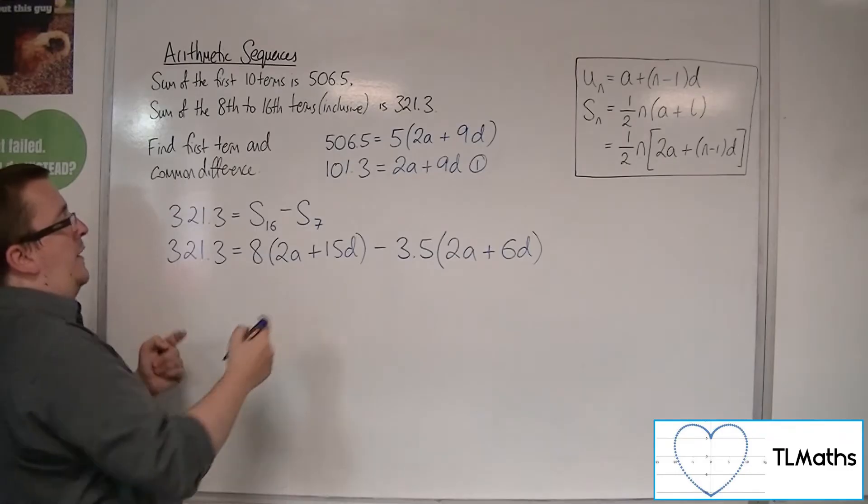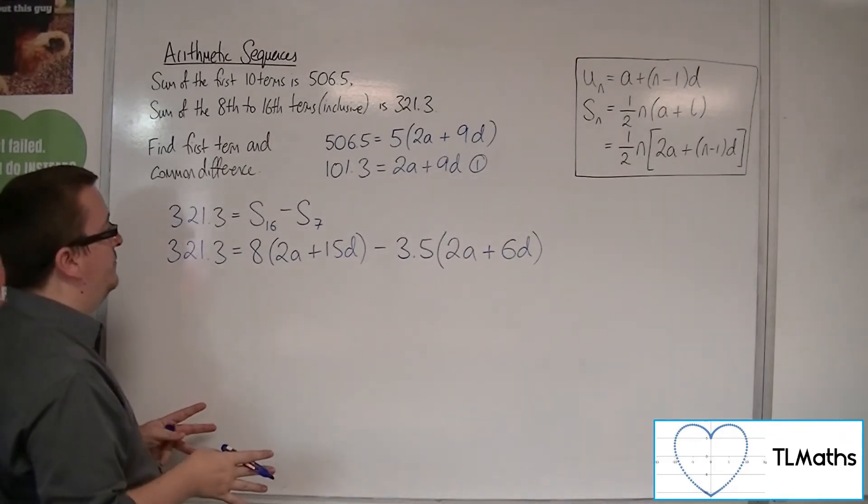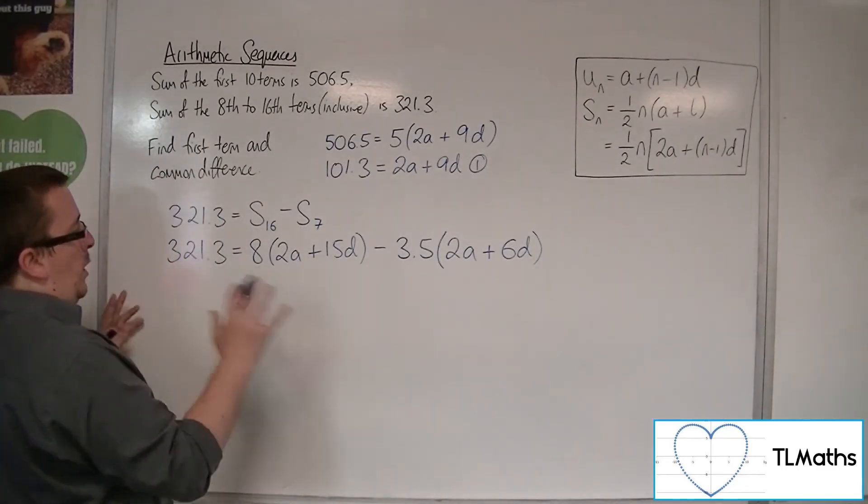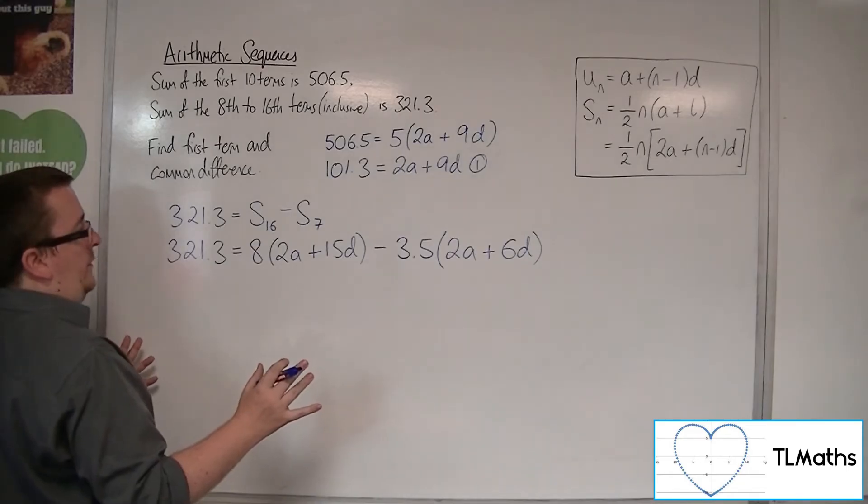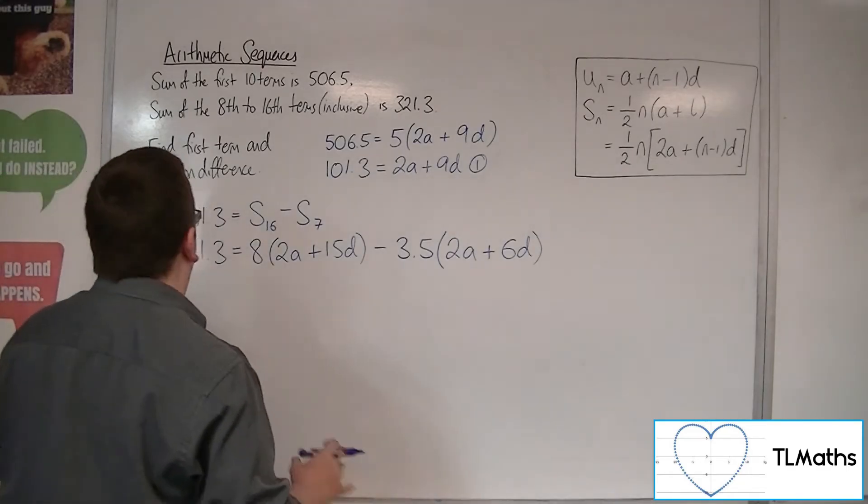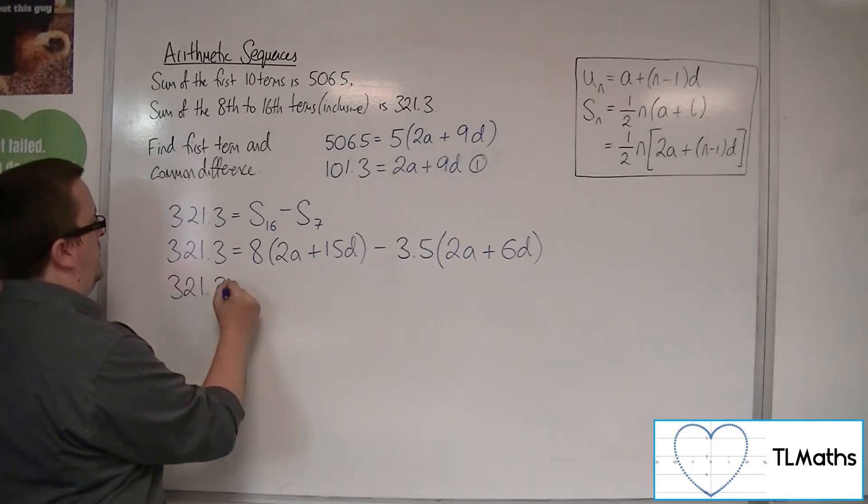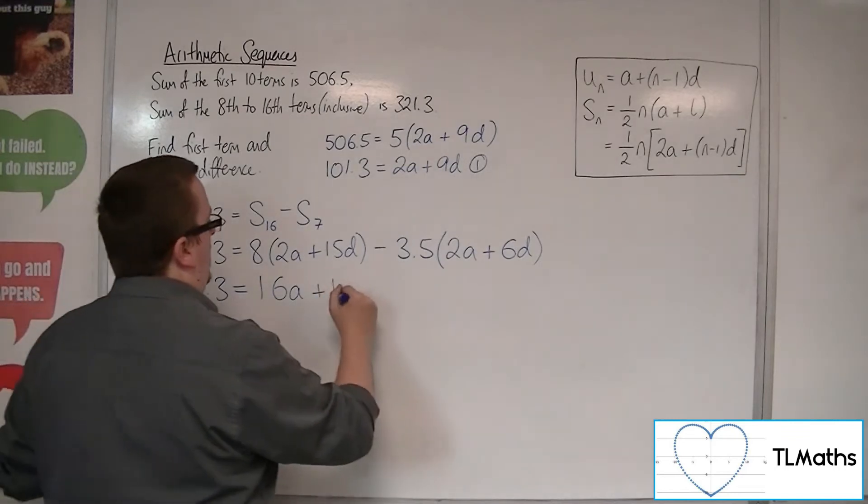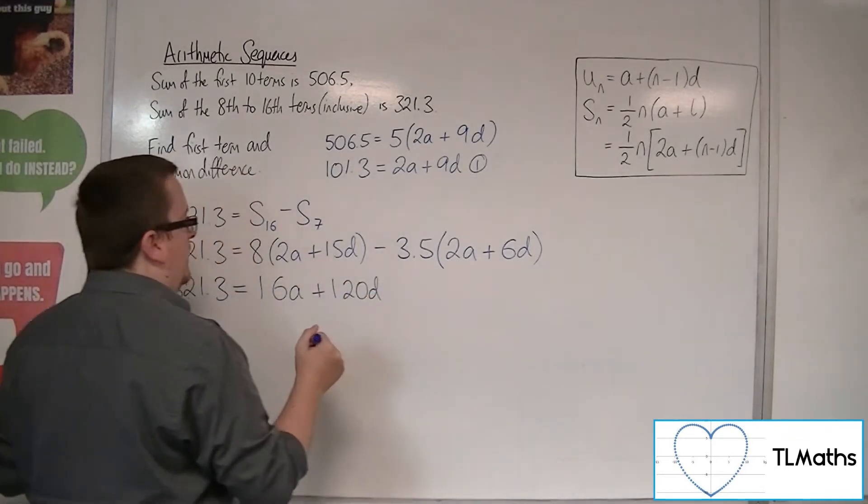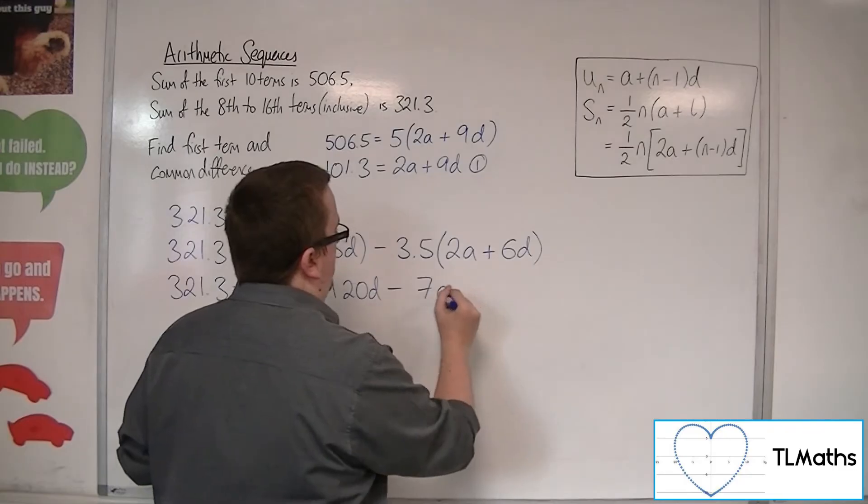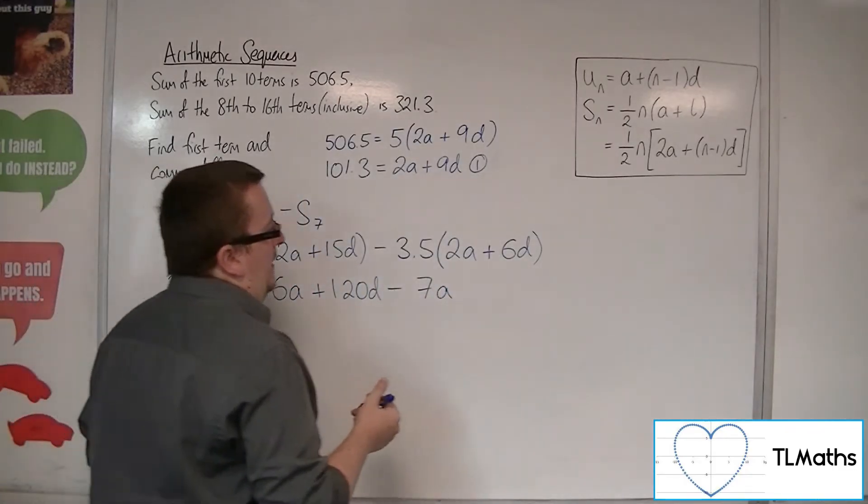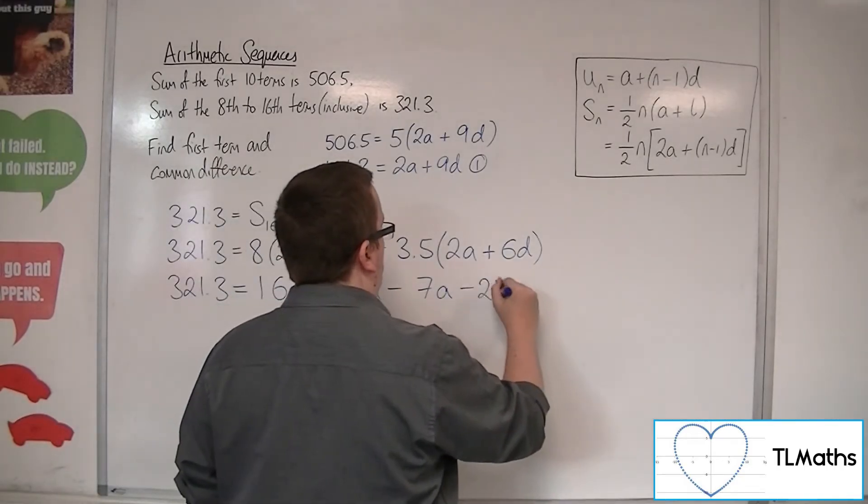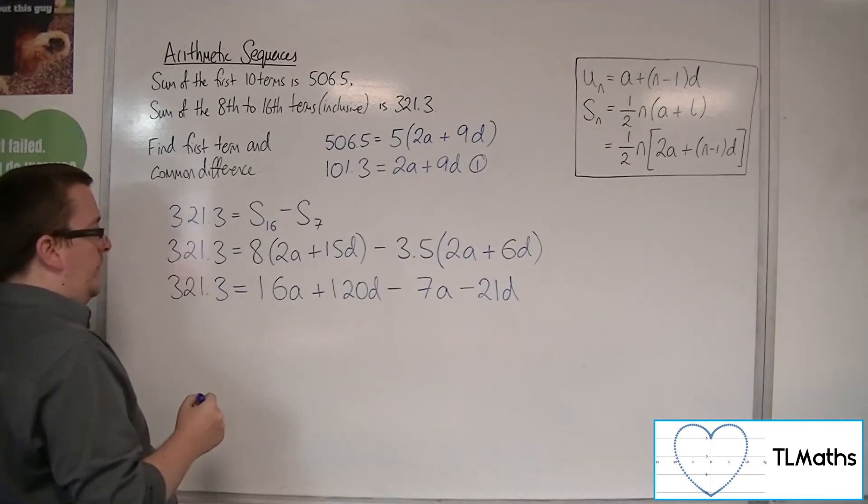So here is my equation, and I need to simplify this down. If I multiply through those brackets, that would probably be the best idea at this point. So 321.3 equals 16a plus 120d, take away 7a—so 3.5 times 2 is 7—and then 3.5 times 6 will be 21, so minus 21d.